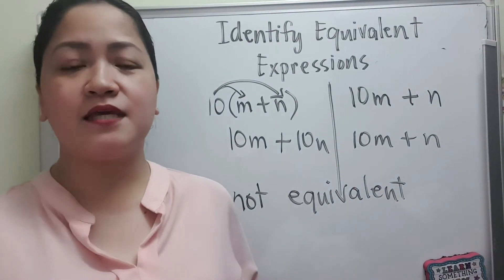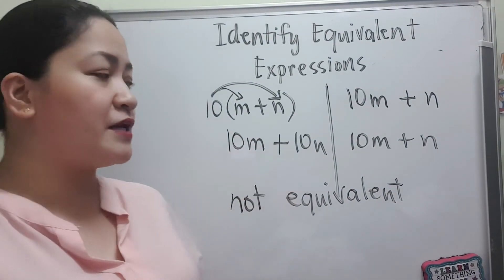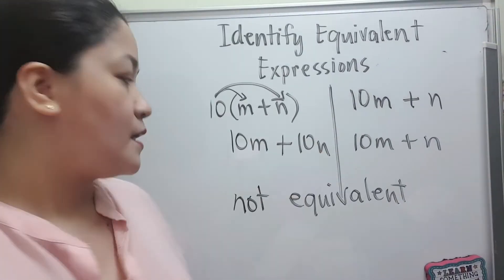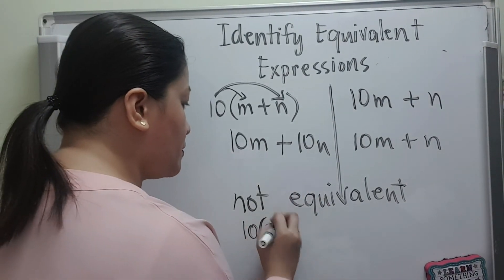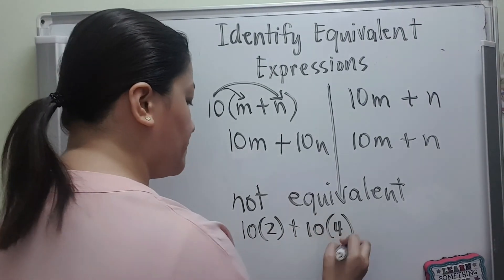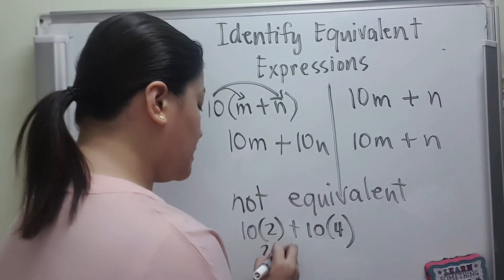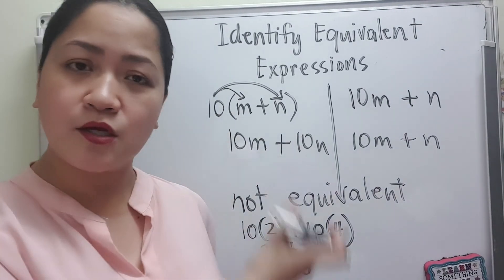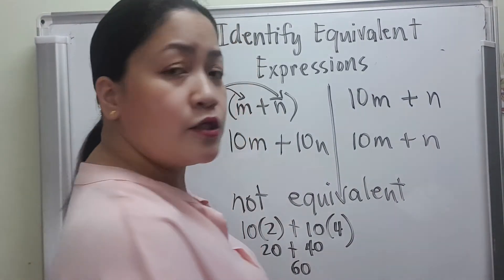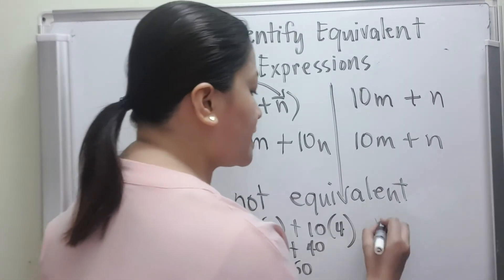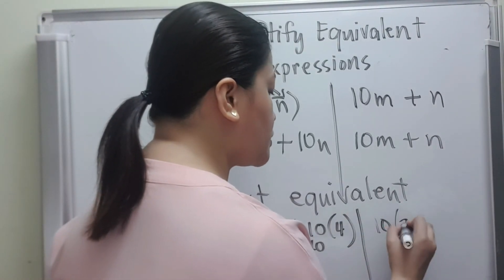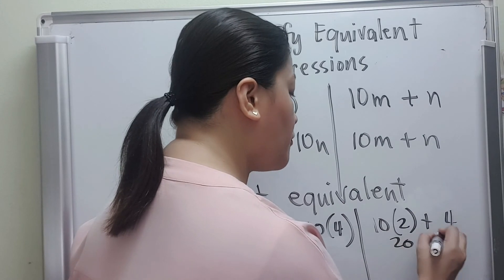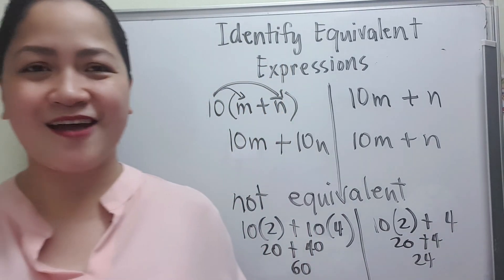To check whether they are really not equivalent, we can substitute values for m and n. Let us use 2 for m and 4 for n. For 10(m+n): 10 times 2 is 20, plus 10 times 4 is 40, giving 60. For 10m plus n: 10 times 2 is 20, plus 4 is 24. As you can see, 60 and 24 confirm they are really not equivalent.